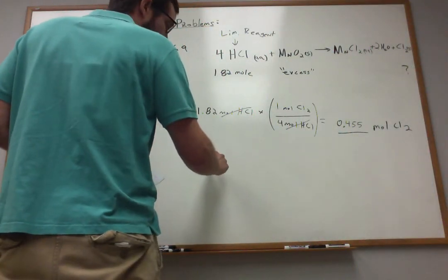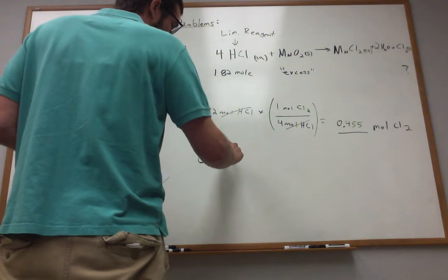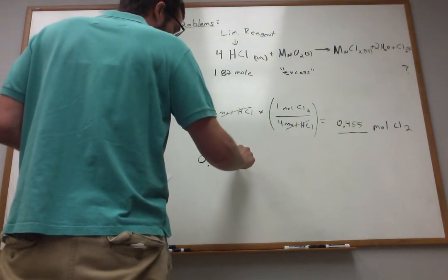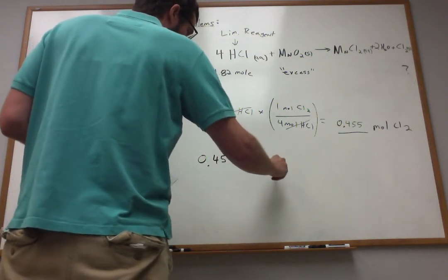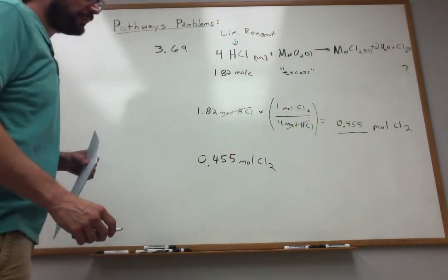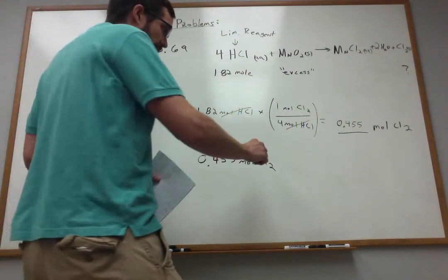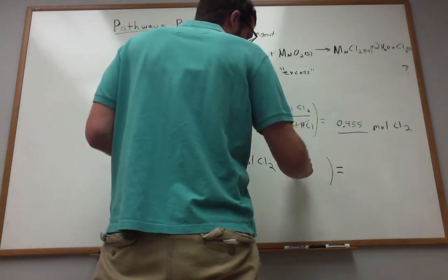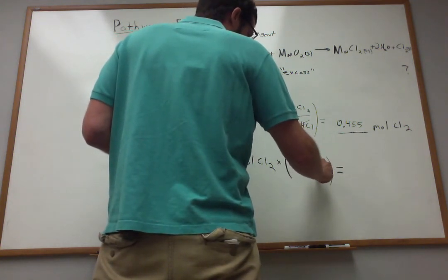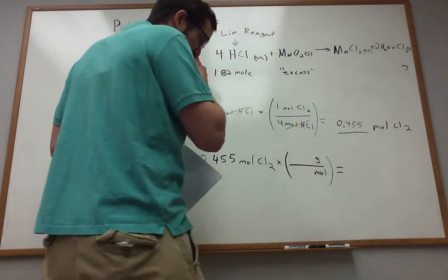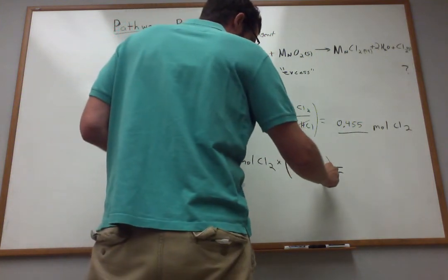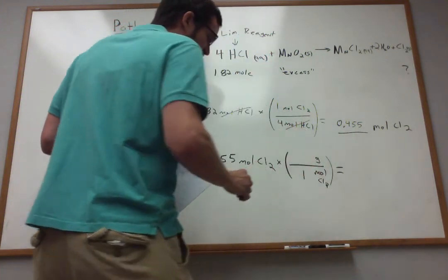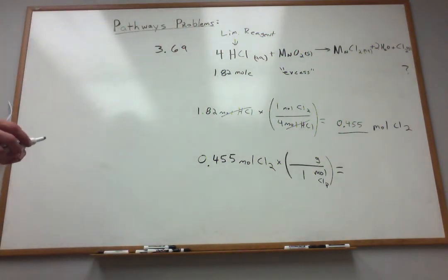And all we need to do to figure this out is a moles to grams conversion. Pretty simple stuff at this point, hopefully. We take the number of moles of Cl2 that can be possibly produced and we again do a unit conversion into gram units from moles.